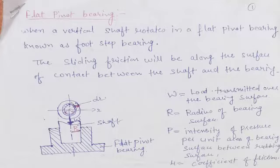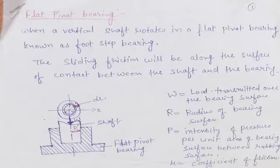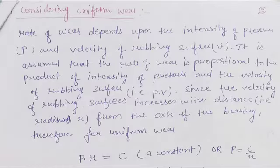The first line and the diagram remains the same as before. A small ring was considered at a small radius r distance with dr thickness. The load and everything we can see in the first slide. We will see the derivation with reference to uniform wear.